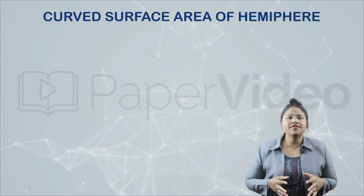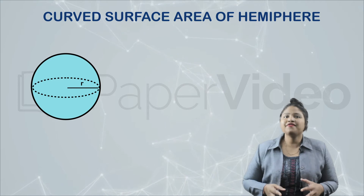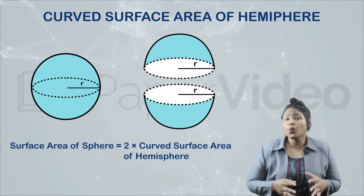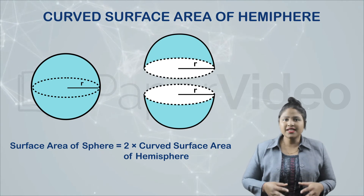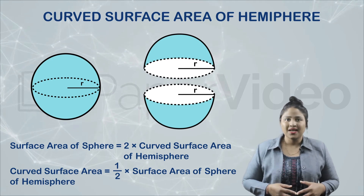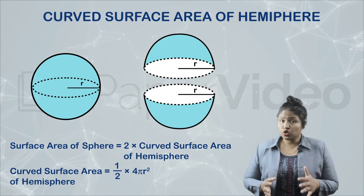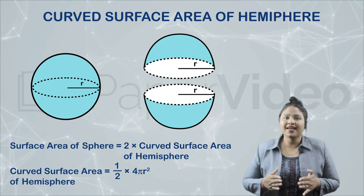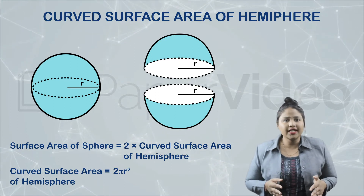What will be the curved surface area of a hemisphere? Let us suppose we have a sphere of radius r. If we split the sphere into two hemispheres, then the surface area of the sphere will be equal to the combined curved surface area of the hemispheres. This means the curved surface area of a hemisphere is half of the surface area of a sphere. Since the surface area of a sphere is four pi r square, the curved surface area of a hemisphere will be half into four pi r square, which equals two pi r square.